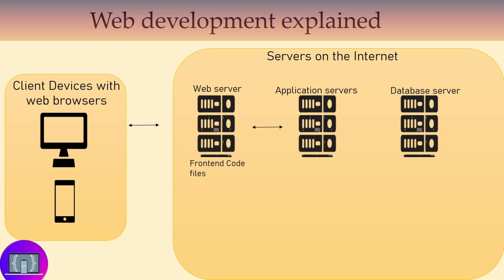The web servers and the front-end code can communicate with the application server, requesting back-end code files. These back-end code files on the application servers permit the front end to know how to communicate with the databases to request information. These application servers have code which permits the front end to communicate with the databases, requesting database data.